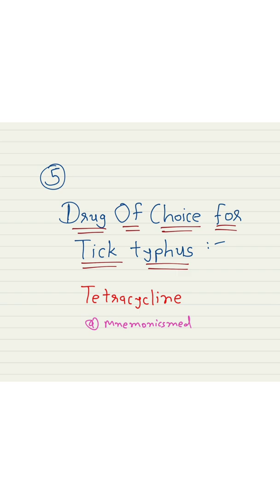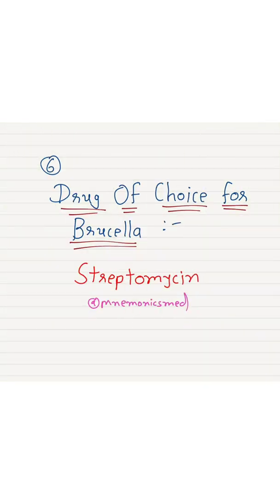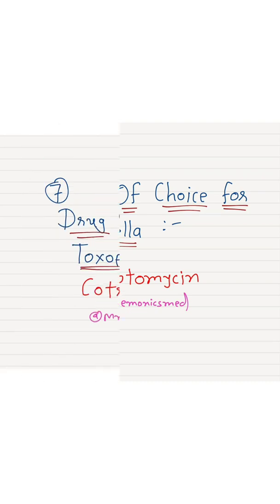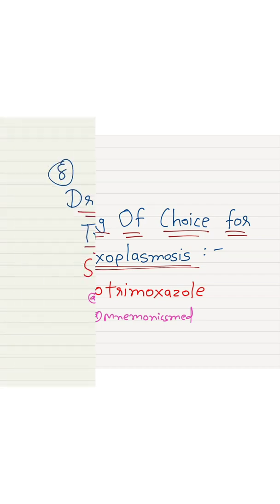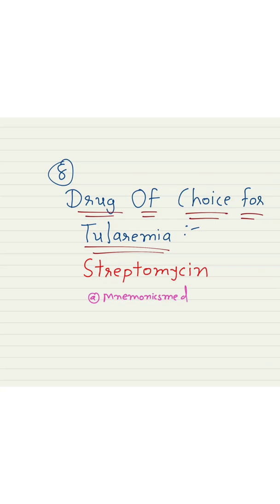The drug of choice for brucella is streptomycin. You have to remember streptomycin for the drug of choice for brucella. The drug of choice for toxoplasmosis is cotrimoxazole. You have to remember cotrimoxazole for toxoplasmosis. The drug of choice for tularemia is streptomycin.